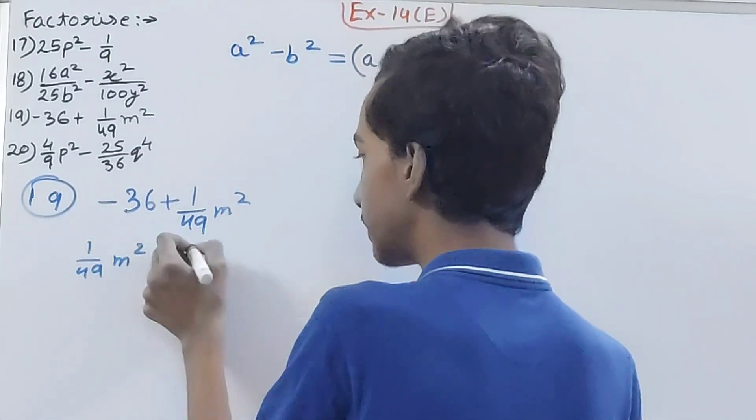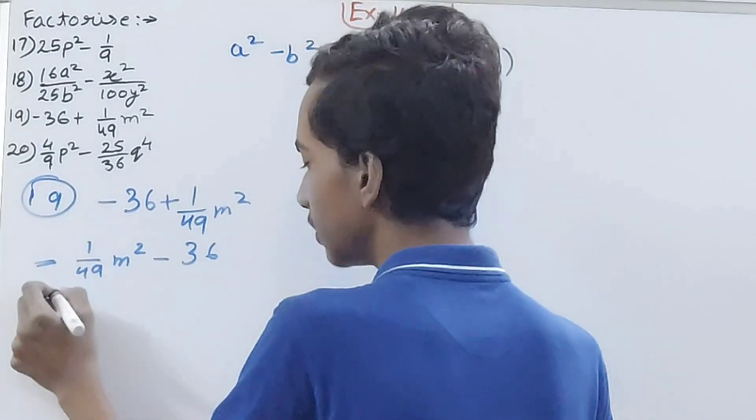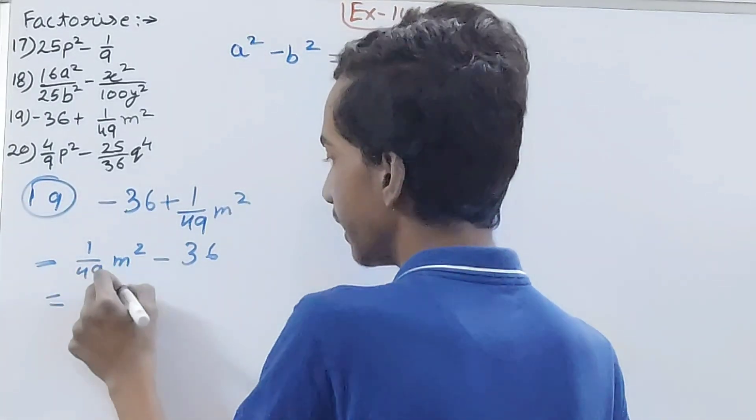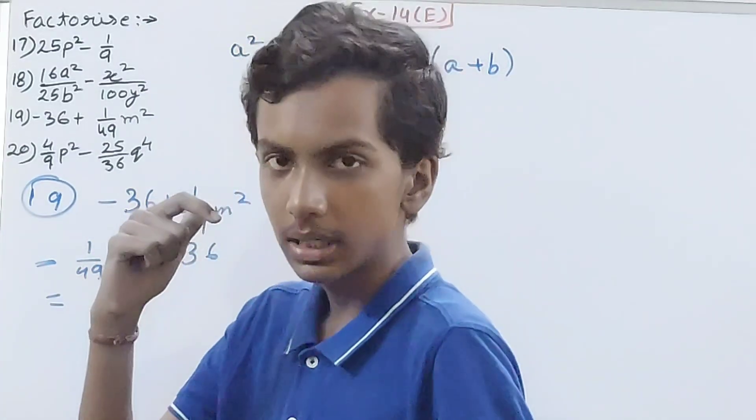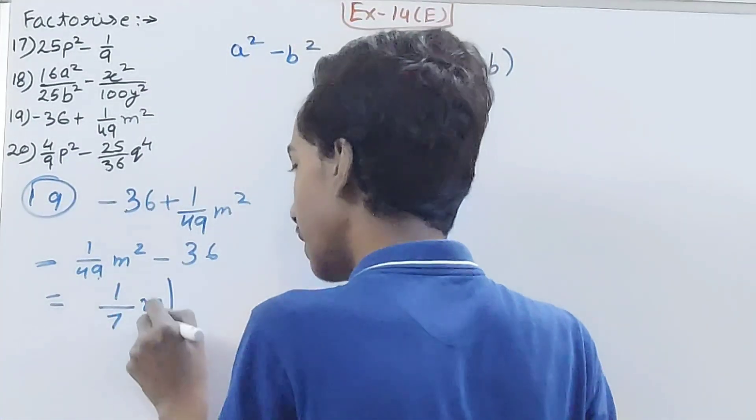So 1/49, that means 1/7, because 49 is the square of 7, and m² is the square of m, minus 36.